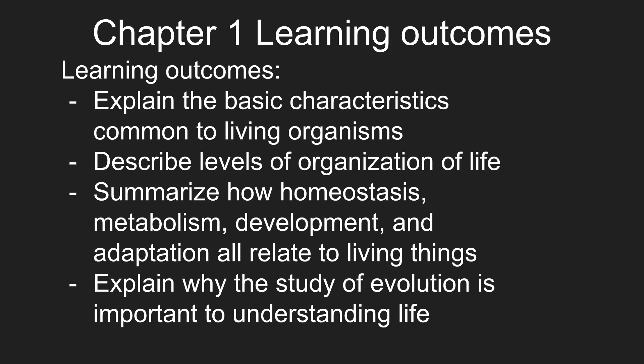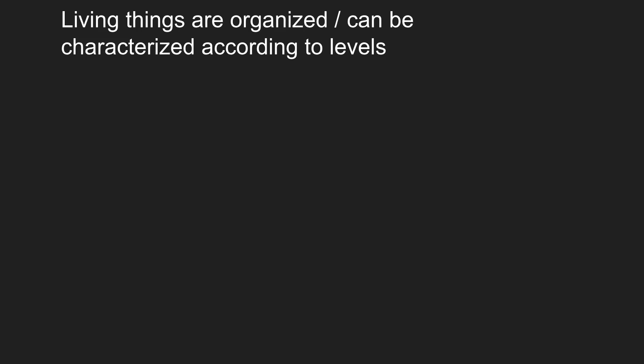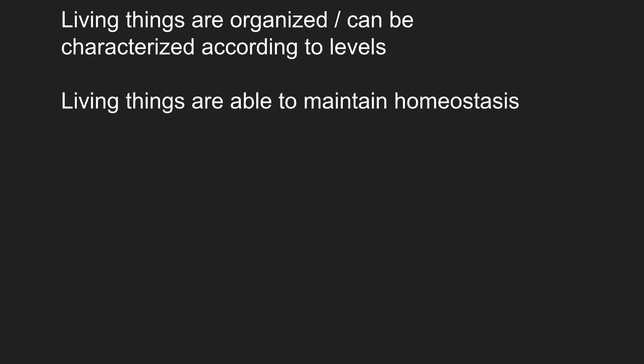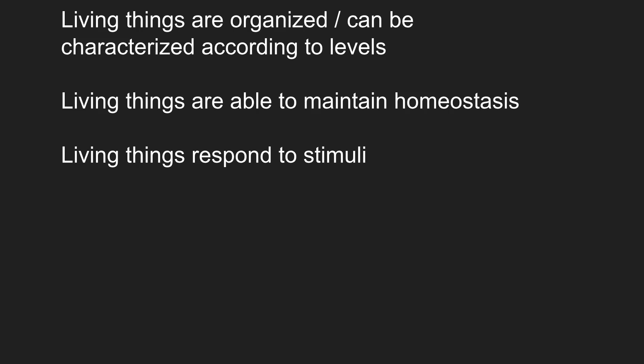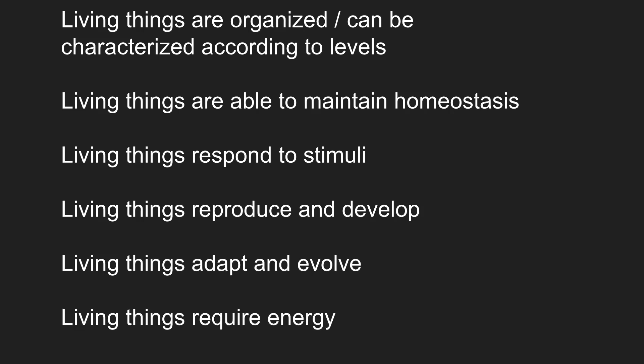Here are the learning outcomes from Chapter 1. We're going to explore each one in more detail. The first is to explain the basic characteristics common to living organisms. Living things are organized and can be characterized according to different levels. Living things are able to maintain homeostasis. Living things respond to stimuli. Living things reproduce and develop. Living things adapt and evolve. And finally, living things require energy.